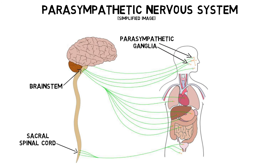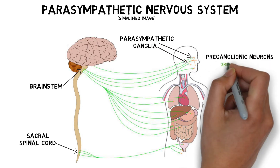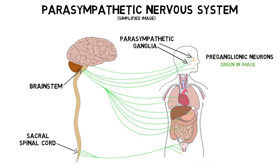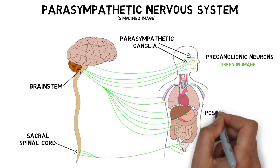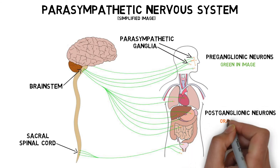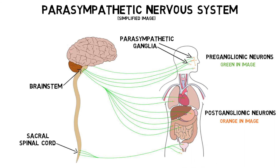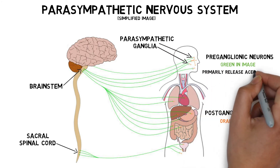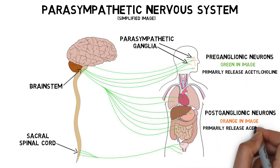The neurons that travel from the brainstem and spinal cord to the parasympathetic ganglia are called preganglionic neurons, and they synapse with neurons in the ganglia called postganglionic neurons, which then extend to the targets of the parasympathetic nervous system. The preganglionic and postganglionic neurons of the parasympathetic nervous system primarily release the neurotransmitter acetylcholine.